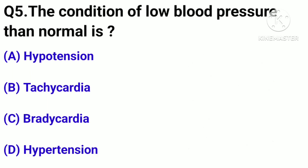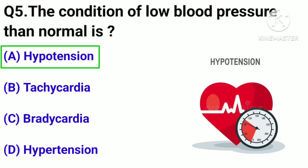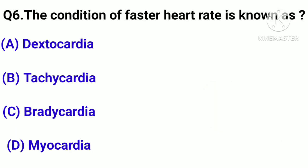Question number 5. The condition of low blood pressure is known as? Option A: Hypotension. Option B: Tachycardia. Option C: Bradycardia. Option D: Hypertension. Correct answer: Option A.